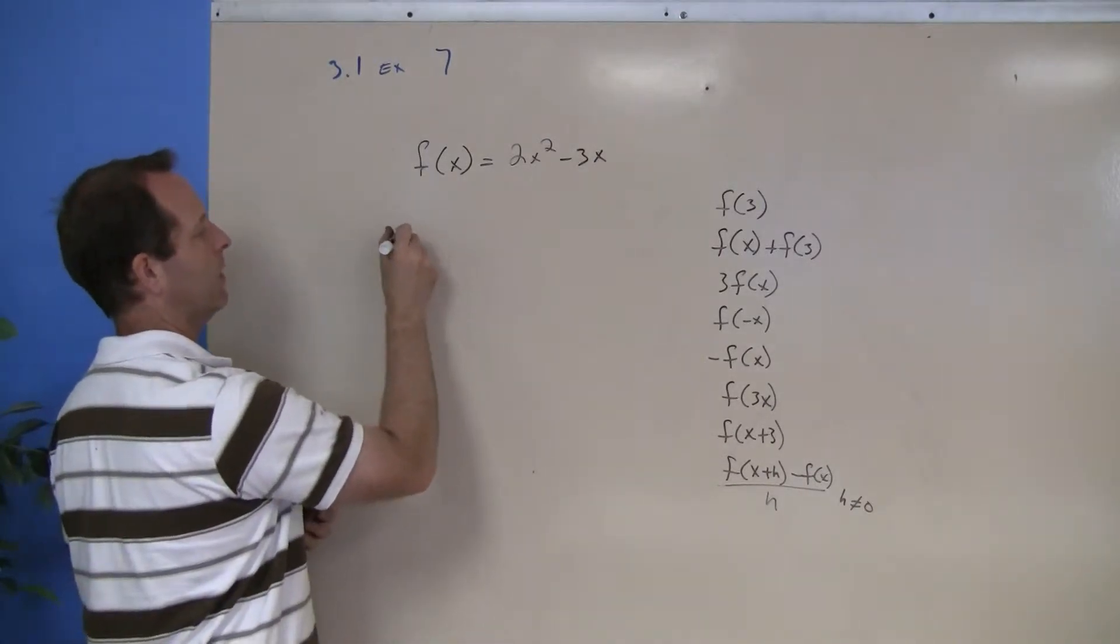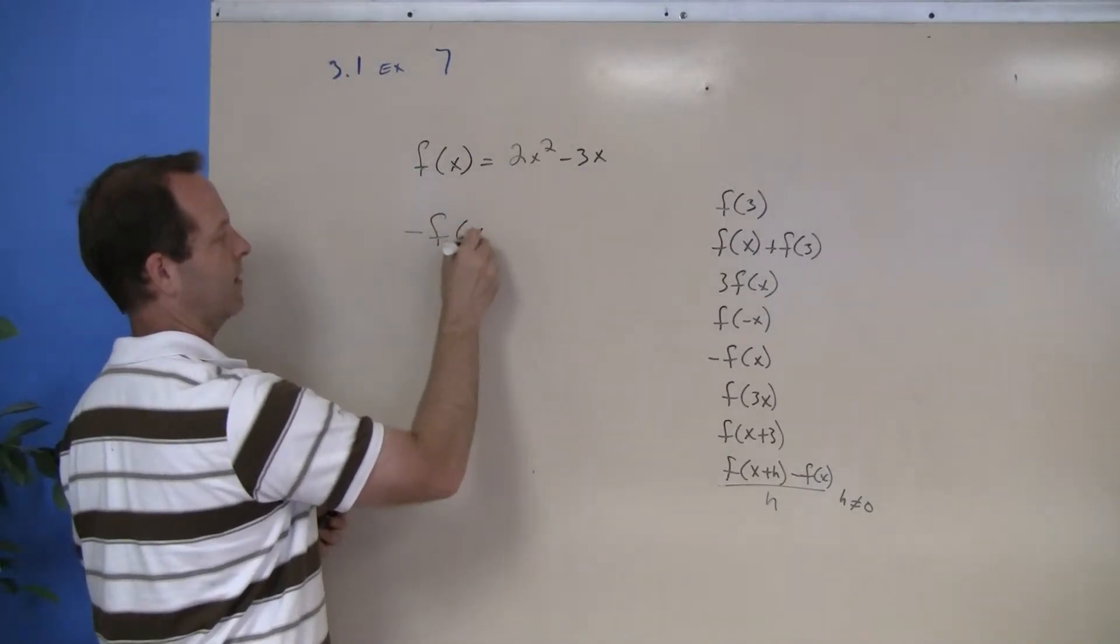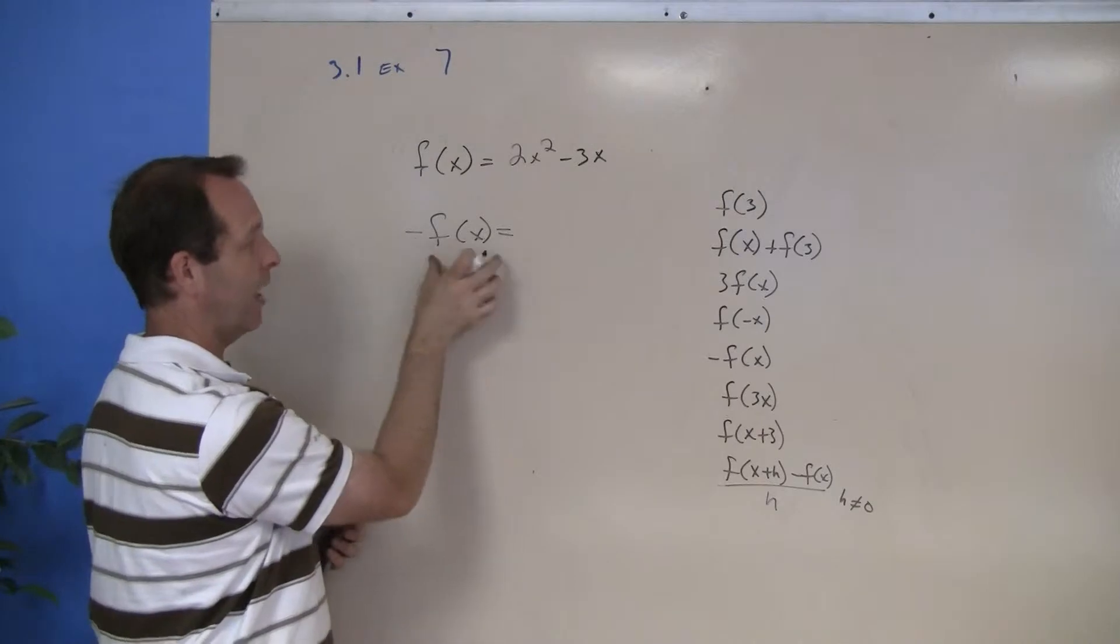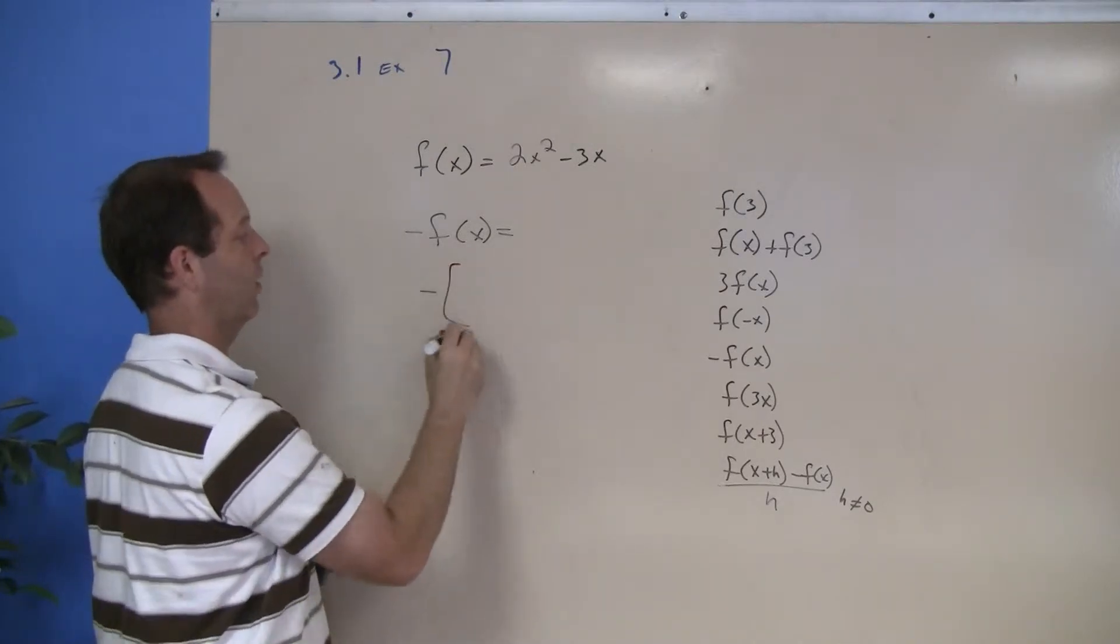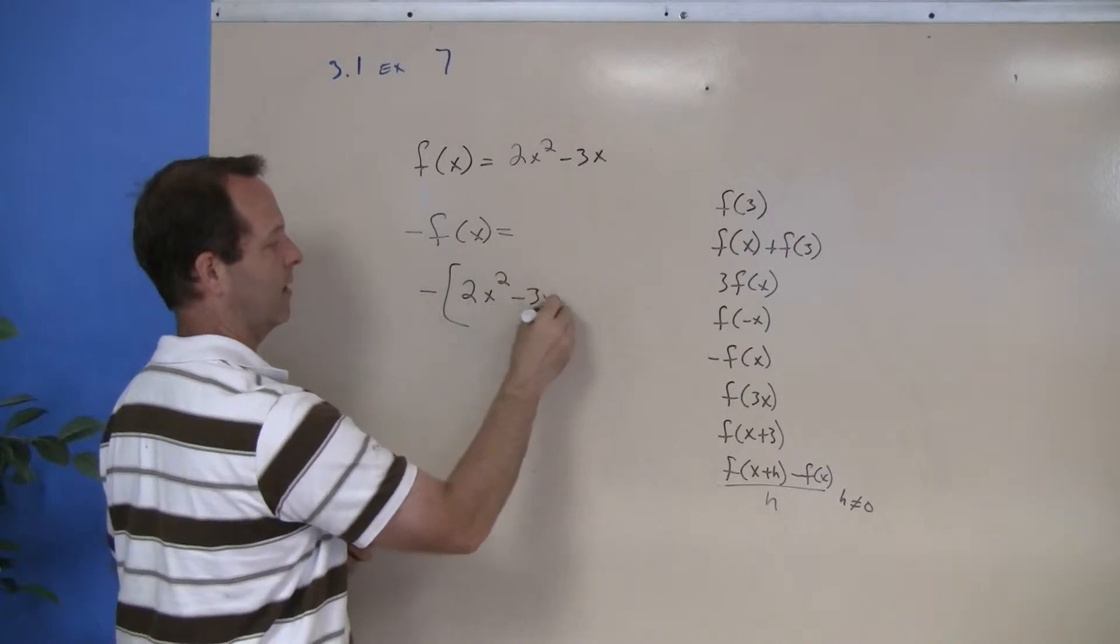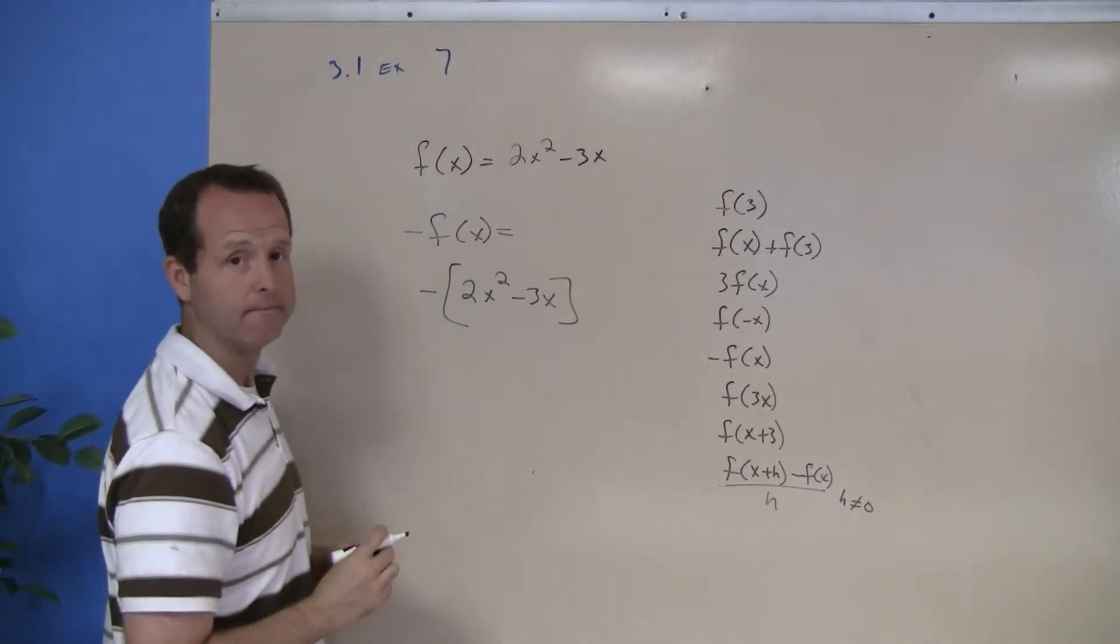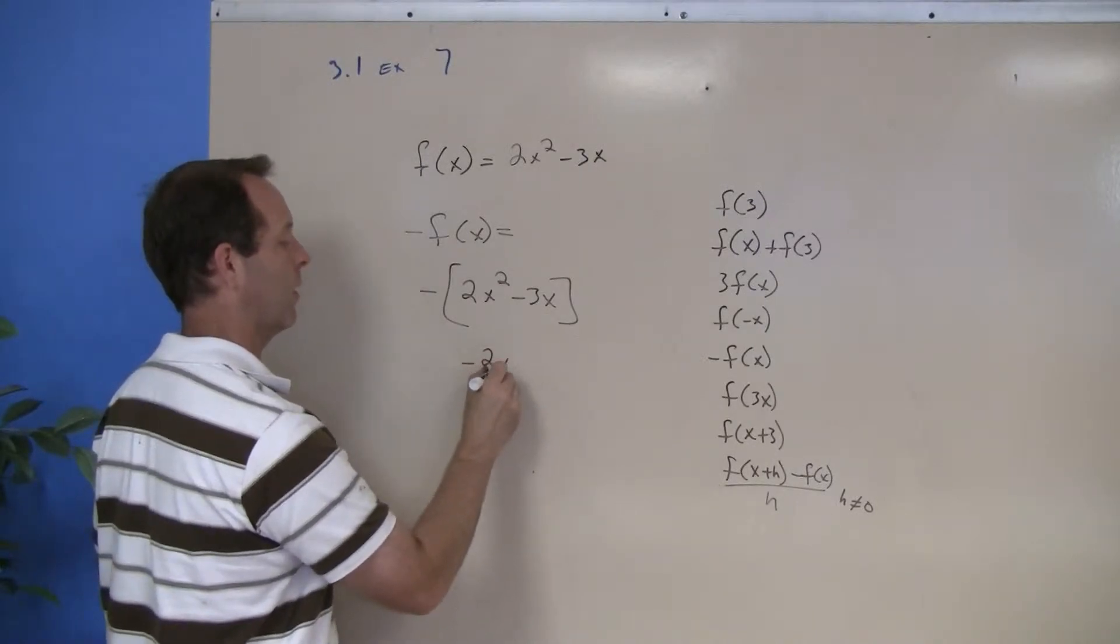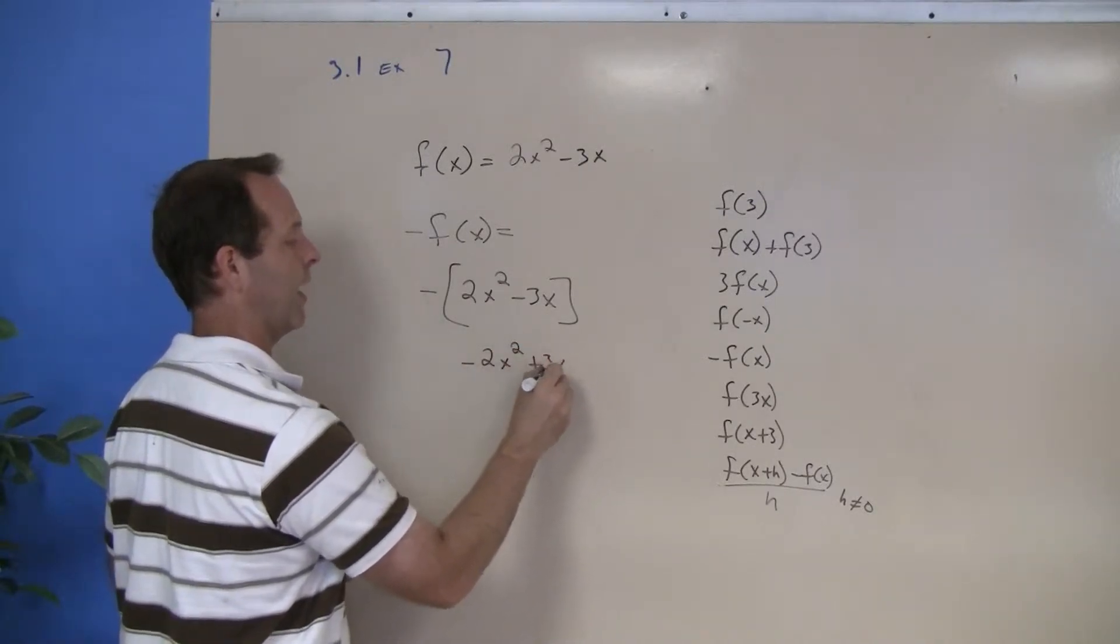Let's look at negative f(x). I'll leave the negative sign outside, and it's the entire function being negatived, so I'm going to make sure I incorporate parenthesis or brackets around the entire function. And then distribute that through, so it's negative 2x squared plus 3x.